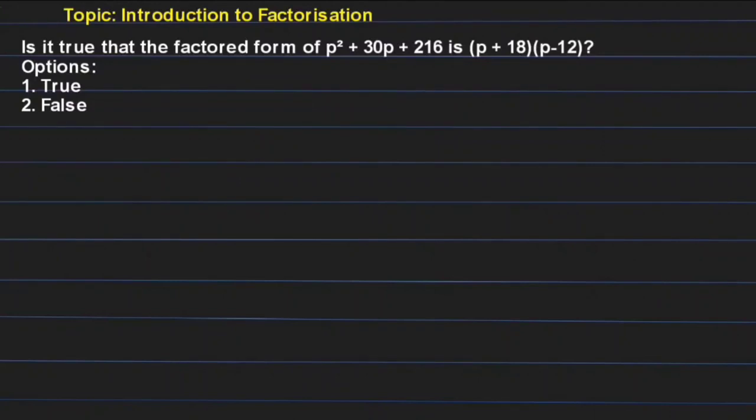Hello students, this question is from the topic introduction to factorization. The question asks: is it true that the factored form of p² + 30p + 216 is (p + 18)(p - 12)?